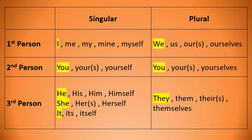Second person singular: you, your, yourself. Second person plural: you, yours, yourselves. Third person singular: he, his, him, himself, she, her, herself, it, its, itself. Third person plural: they, them, their, themselves. Notice the pronouns that are highlighted are those placed before the verb — they are the subject pronouns.